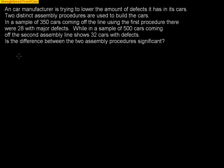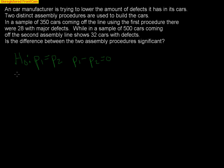We have to start off testing on the assumption that they are exactly the same — that's the key thing to understand. So we start off with a null hypothesis: the proportion from procedure one equals the proportion from procedure two. Another way to look at it is that the difference, proportion one minus proportion two, equals zero. Either form shows that there is no difference between the two assembly procedures, and that's what we have to start off thinking.